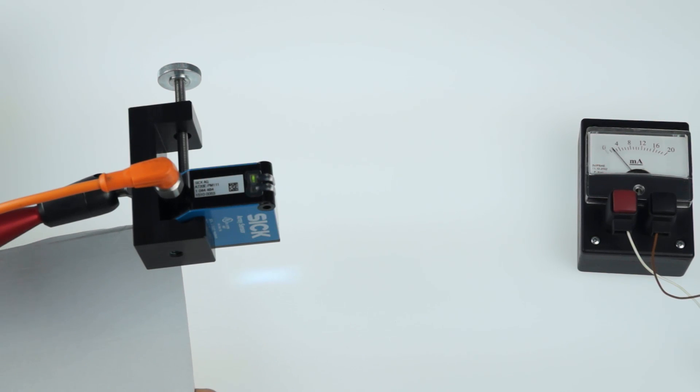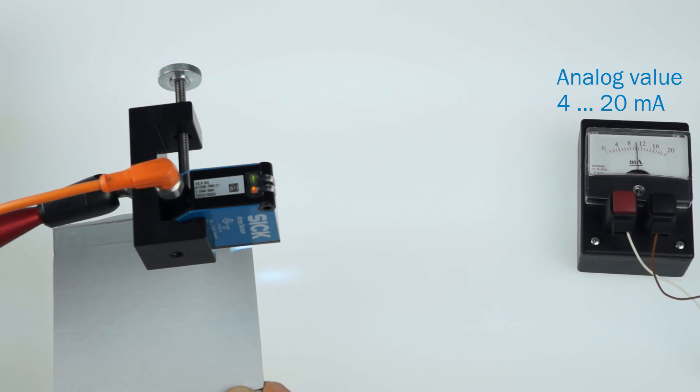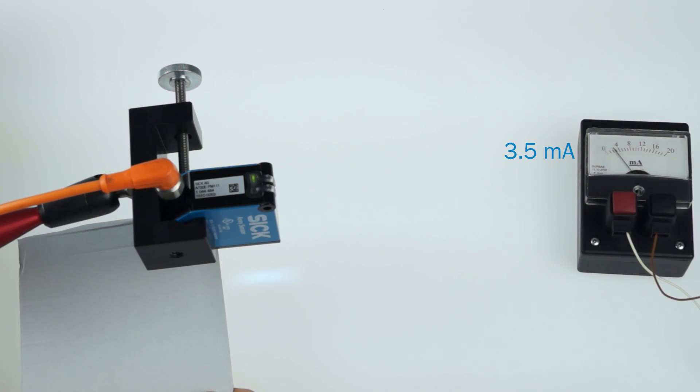The array sensor detects the first edge of an object from the sensor's plug side. Depending on the actual position, the sensor shows an analog value between 4 and 20 mA. If the material leaves the detection area on the plug side, the sensor shows a value of 3.5 mA.